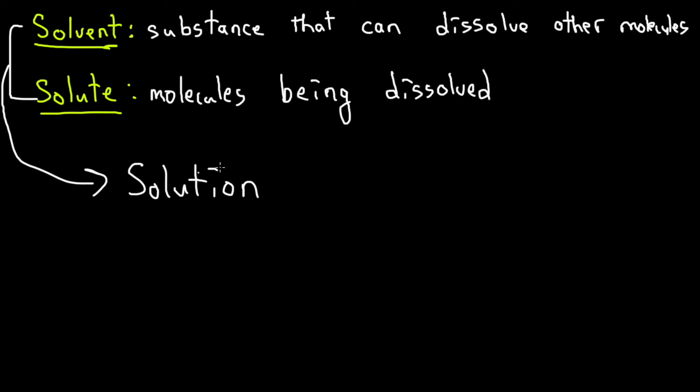First, let's talk about what a solution is. In order to know, we first have to get the definitions of solvent and solute. Solutions involve two types of molecules or compounds. One is considered the solvent because it has the capability to dissolve other things. The solute is the one that's being broken down, the one that's being dissolved.